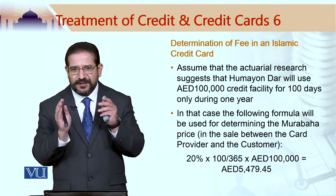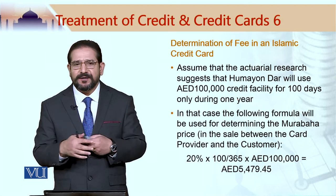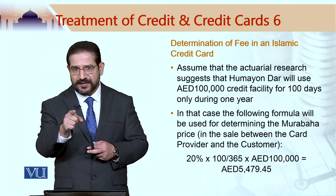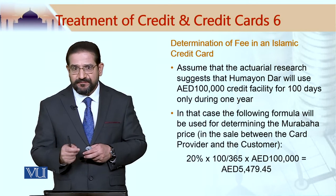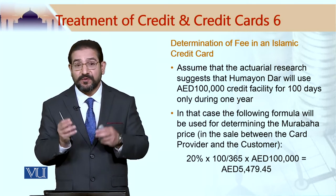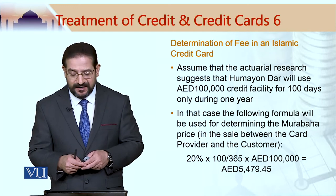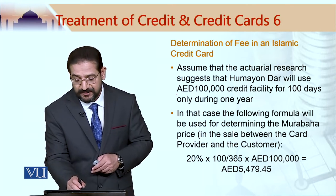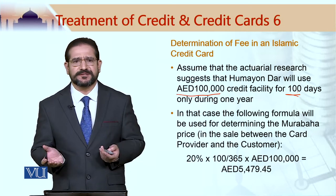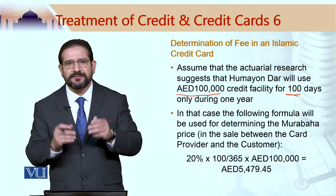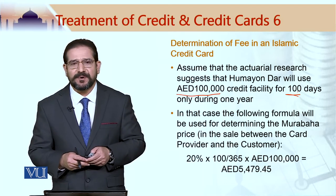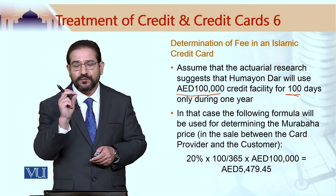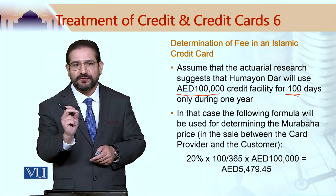Basically, to keep the thing simple for your understanding, the actuarial company would tell the credit card company that this person — Humayudar — if he had this credit card for one year, he would be using a credit facility of say 1,000 dirhams only for 100 days, not for 365 days. Based on this information, the credit card company would come up with the murabaha price in that tawarruq arrangement, which ultimately becomes a basis for determination of the fee.